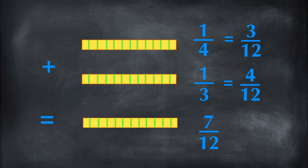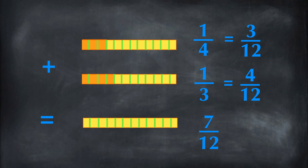We need to multiply the same factor on both numerator and denominator. So multiply 3 on both numerator and denominator of the fraction 1 over 4. Therefore, 1 fourth equals 3 twelfths. And multiply 4 on both numerator and denominator of the fraction 1 over 3. Therefore, 1 third equals 4 twelfths. Now we have the same denominator and the two fractions can be added. 3 twelfths plus 4 twelfths is 7 twelfths.